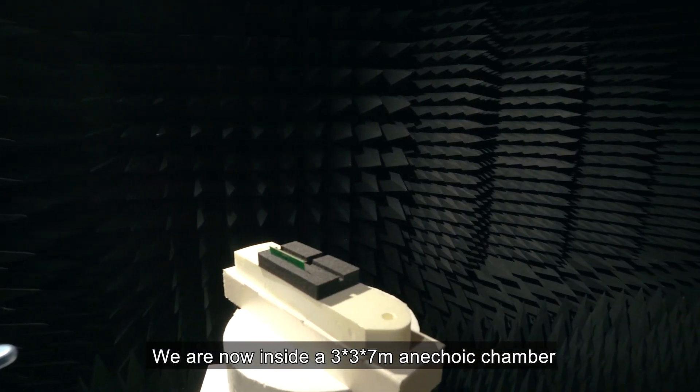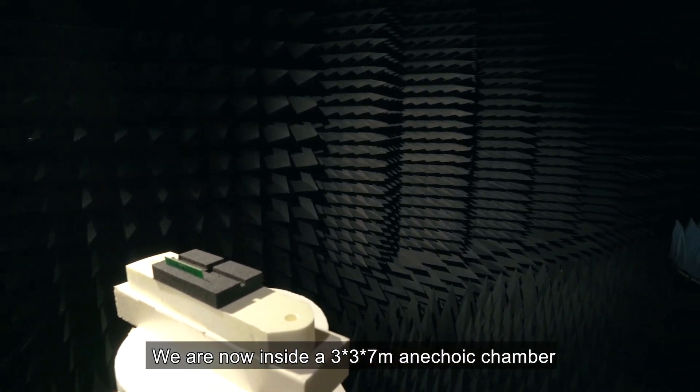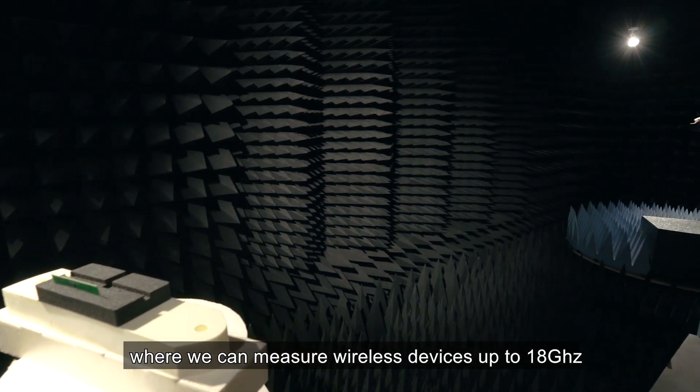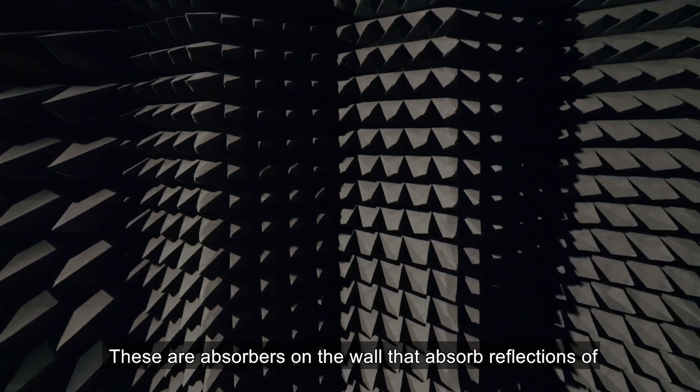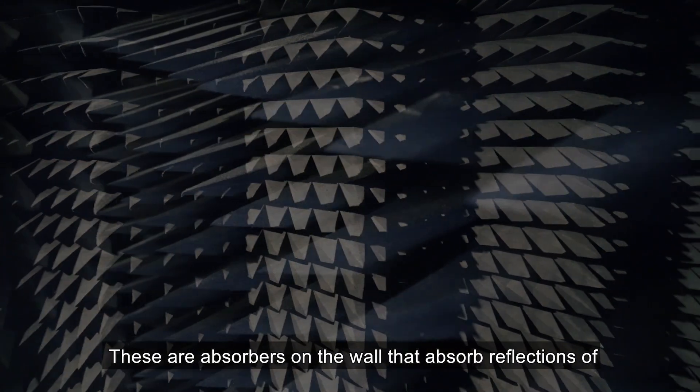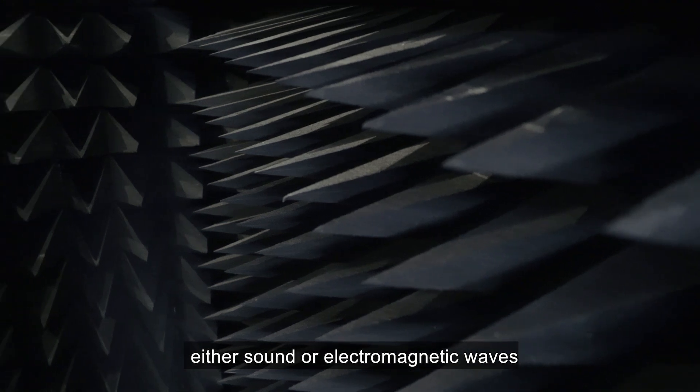We are now inside a 3x3x7 meter anechoic chamber where we can measure wireless devices up to 18 GHz. These are absorbers on the wall that absorb reflections of either sound or electromagnetic waves.